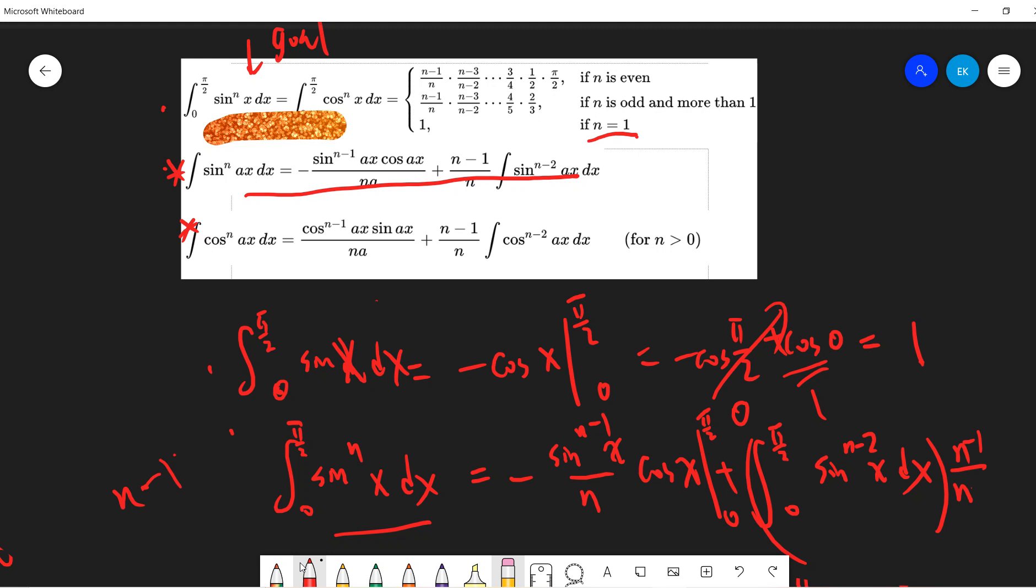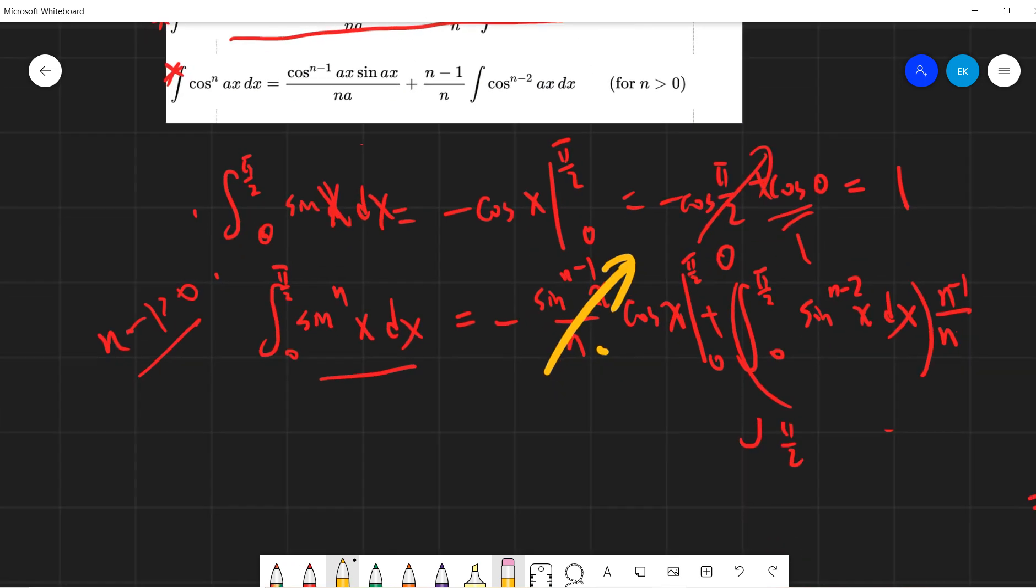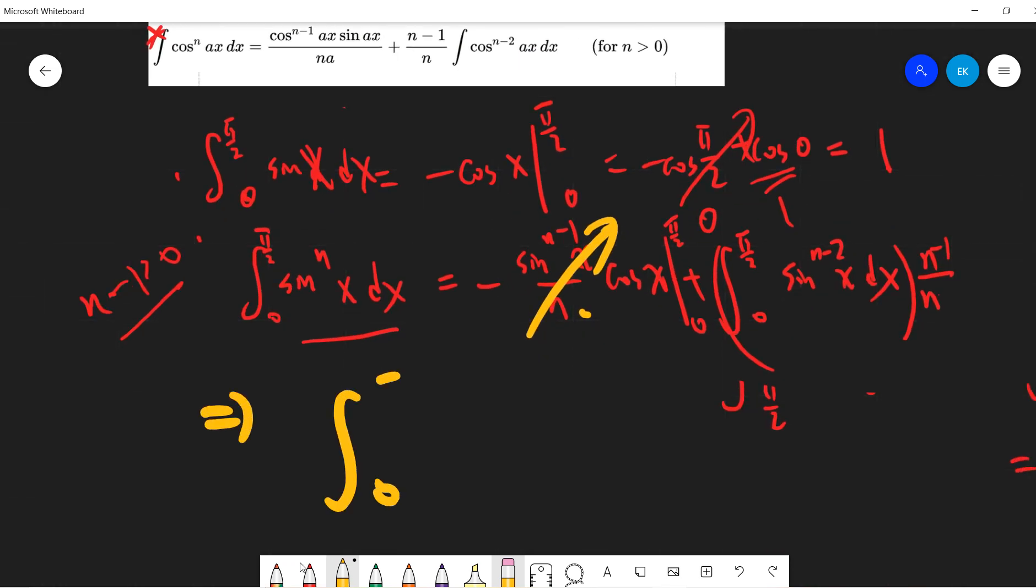Okay, so let's say if n minus 1 is larger than... so you see this is pi over 2, right? So this first term must be 0. And for this term, cosine 0 is 1. So if n minus 1 is larger than 0, then basically these terms cancel, and you have the reduction formula.